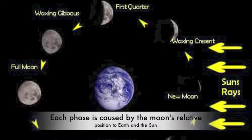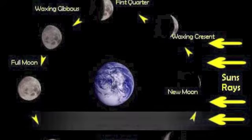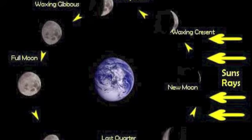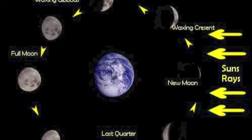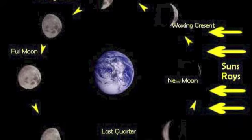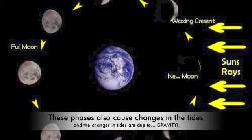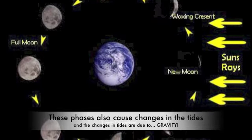Each phase of the moon is caused by the relative position to Earth and the Sun. These phases also cause changes in the tides, and the changes in tide are because of gravity.